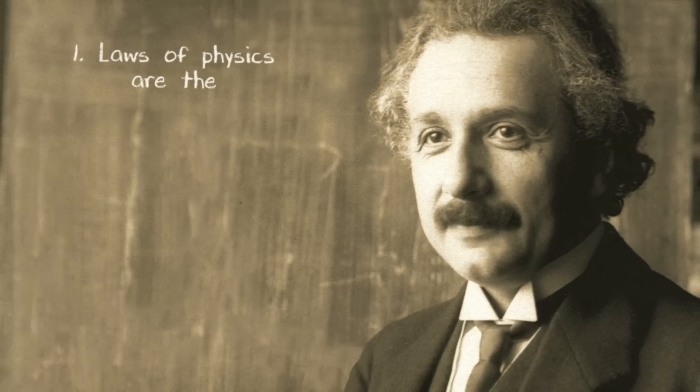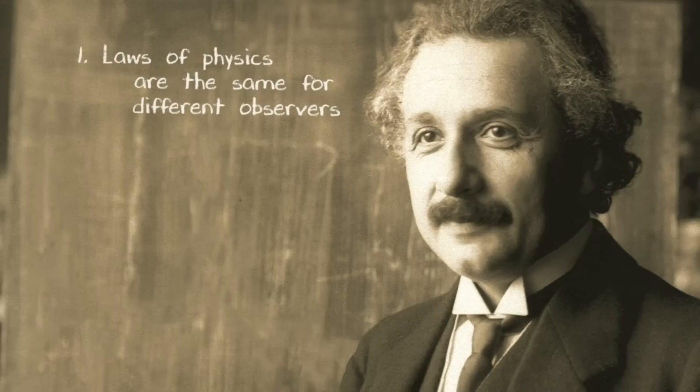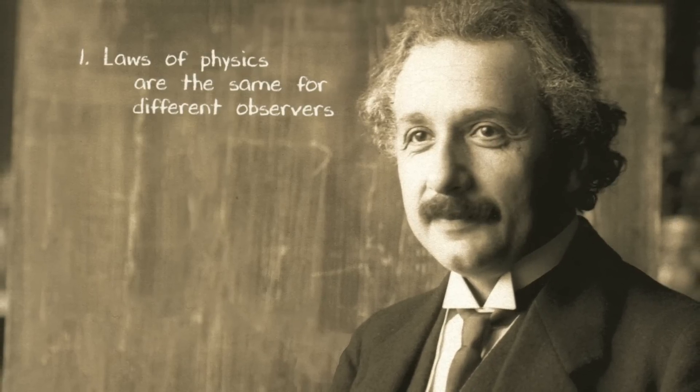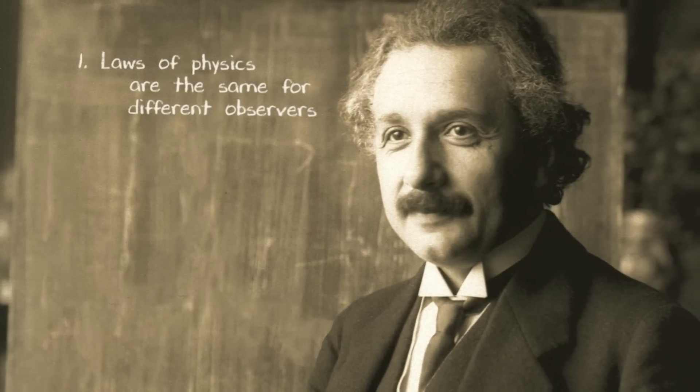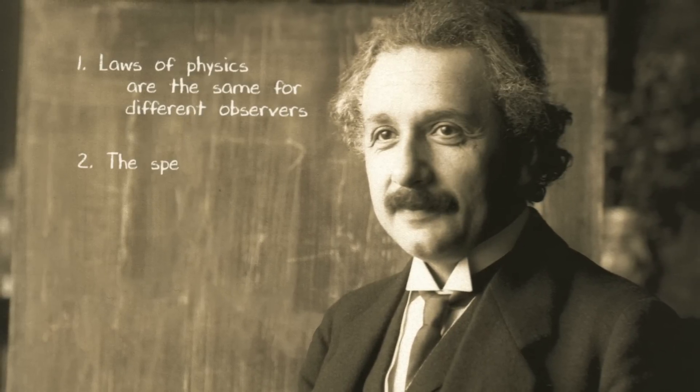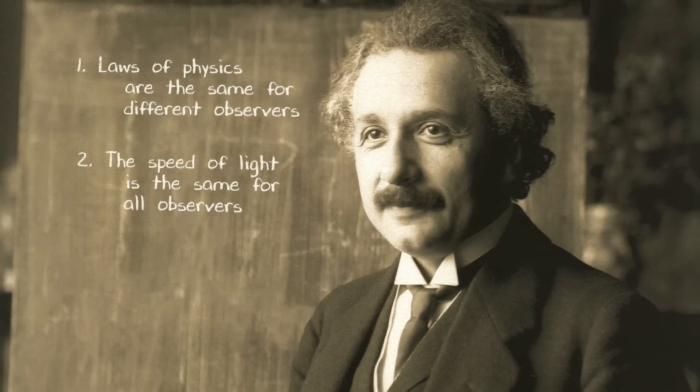Einstein started with two postulates when he did his derivation of special relativity. The first is that the laws of physics are the same for any two people who are moving with respect to one another at a constant speed. These are called inertial observers. And the second postulate is that the speed of light is the same for all observers.